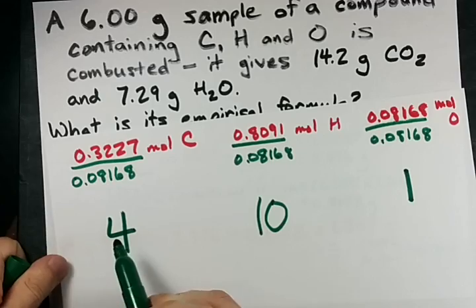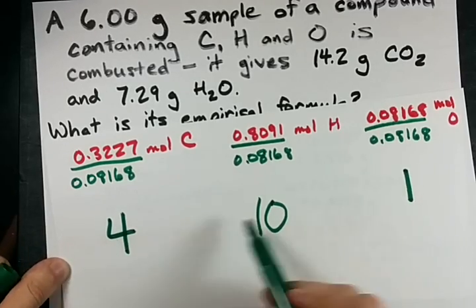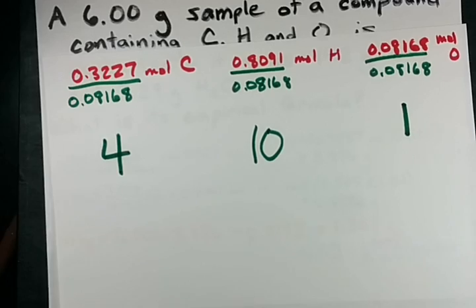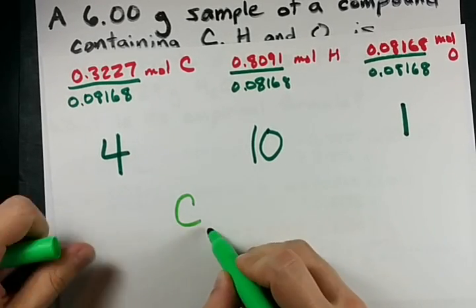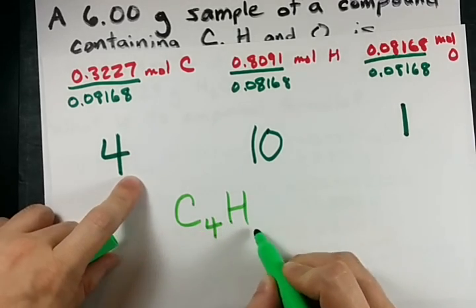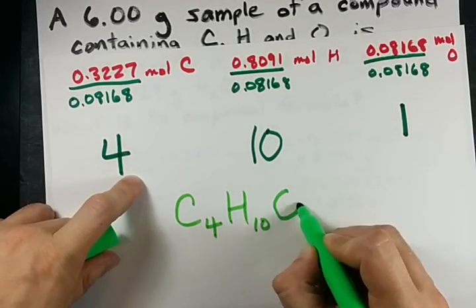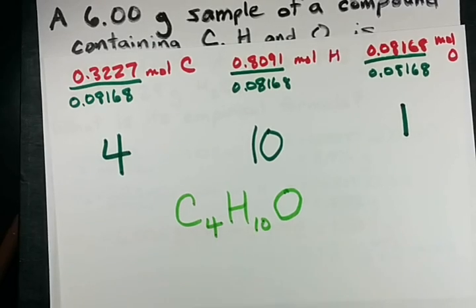If I had gotten a 0.5 somewhere, I simply would have doubled them all to make them all whole numbers. Thus, my empirical formula is 4 carbons to 10 hydrogens to 1 oxygen. And this is it.